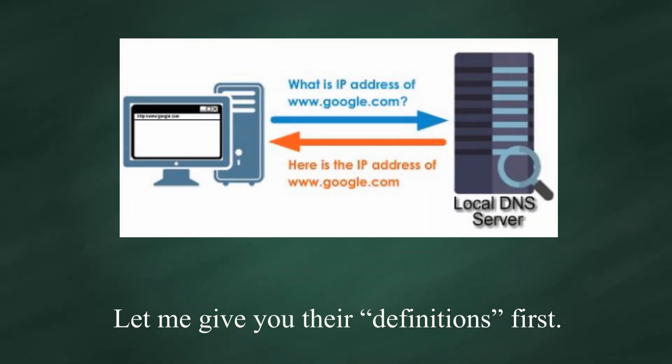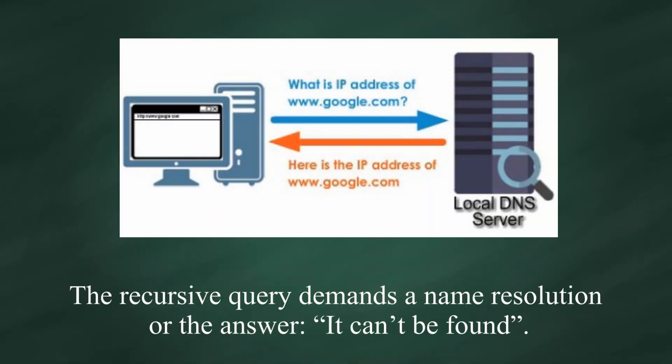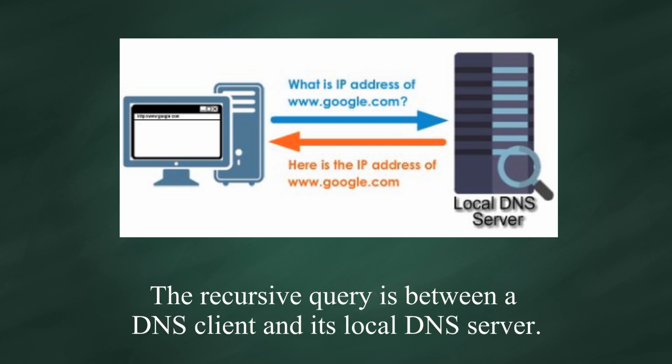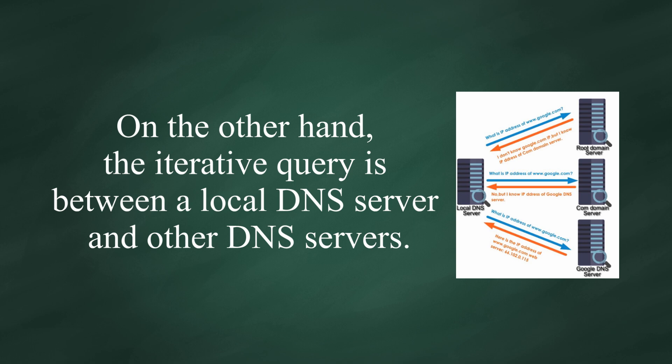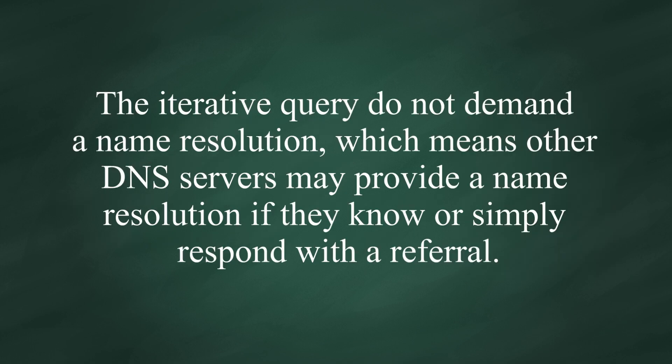Let me give you their definitions first. The recursive query demands a name resolution or the answer — it cannot be left unfound. The recursive query is between a DNS client and its local DNS server. On the other hand, the iterative query is between a local DNS server and other DNS servers. The iterative queries do not demand a name resolution, which means other servers may provide a name resolution if they know, or simply respond with a referral.